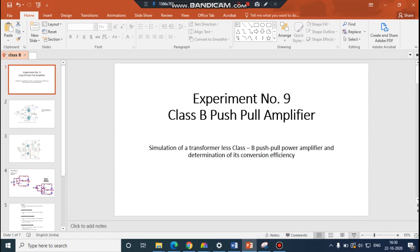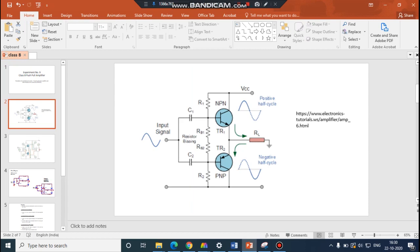Experiment 9 is Class B push-pull amplifier. The aim of the experiment is simulation of a transformerless Class B push-pull power amplifier and determination of its conversion efficiency. First of all, what is a Class B push-pull amplifier? Why the name push-pull?